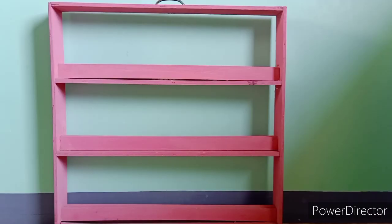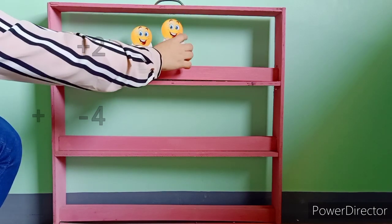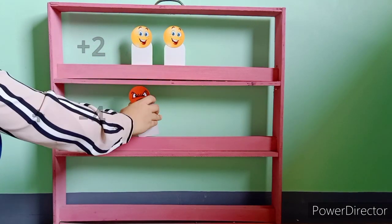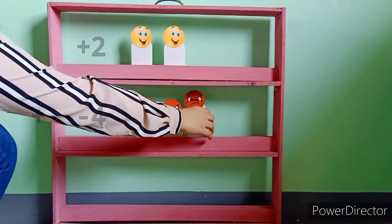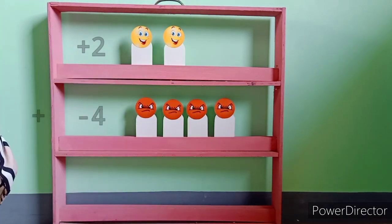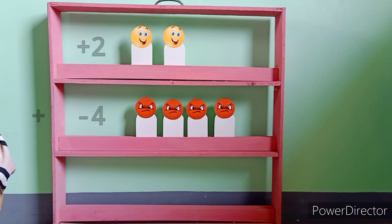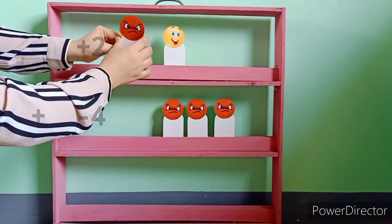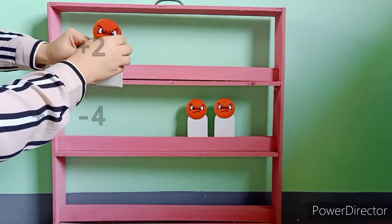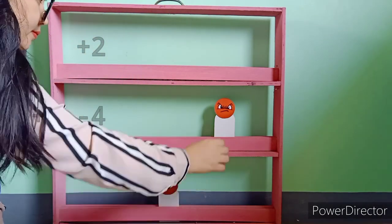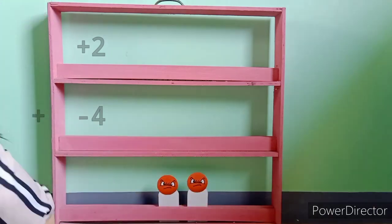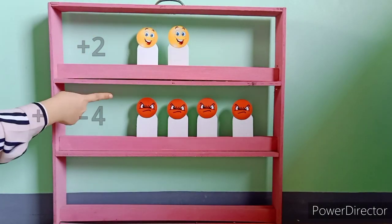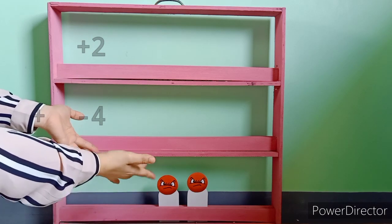Moving on, let's have this example: positive 2 plus negative 4. Can you see opposite numbers? Yes, there are pairs that are opposite. Therefore, we will be eliminating them. What is left is the answer. Therefore, positive 2 plus negative 4 is equal to negative 2.